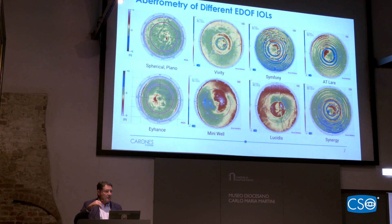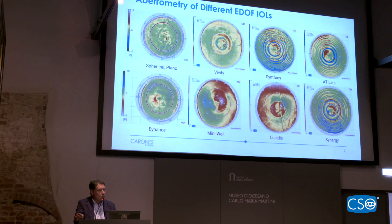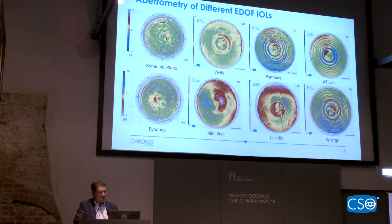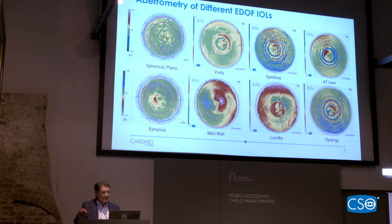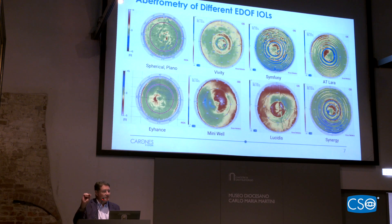We know that the Pyramids or Osiris aberrometer — call it as you like, it's the same machine — has huge ability to give us the optical properties of IOLs. For instance, comparing the accuracy for measuring aberrations of eyes that received a presbyopia-correcting IOL, you can really find differences among lenses, especially if you measure these differences using dioptric power instead of wavefront, because dioptric power is more accurate than wavefront.